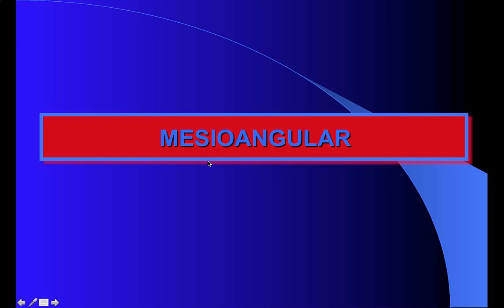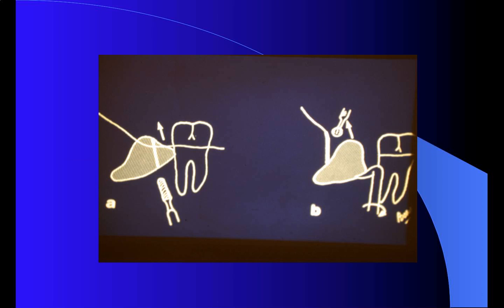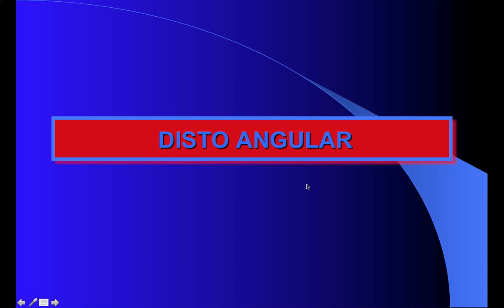Another very common position is the mesioangular position. Here, we cut vertically through part of the crown to create enough room to place our elevators and rotate the rest of the crown with the roots toward the distal side of the jaw to withdraw the third lower molar.